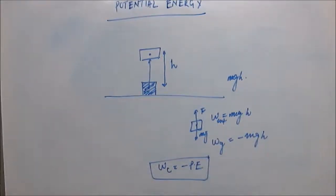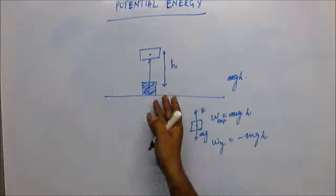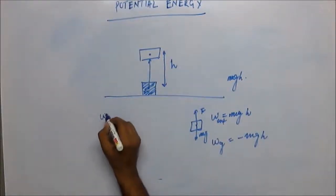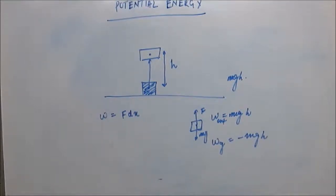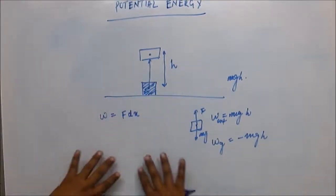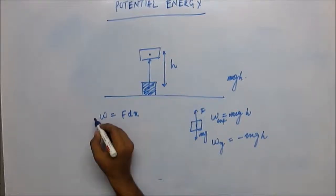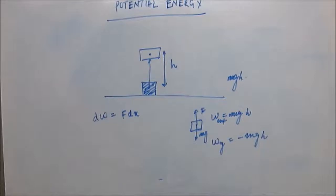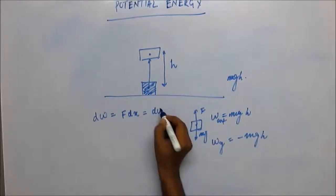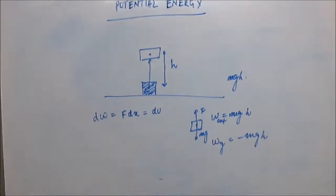One more thing I wanted to highlight: when we displace this block by a small amount, the work that we do is force times small displacement, F times dx. What we are actually doing is separating the block and the Earth system, putting some potential energy into the system. So this small work will actually increase the potential energy by a small amount — this external force times dx will be equal to dU.